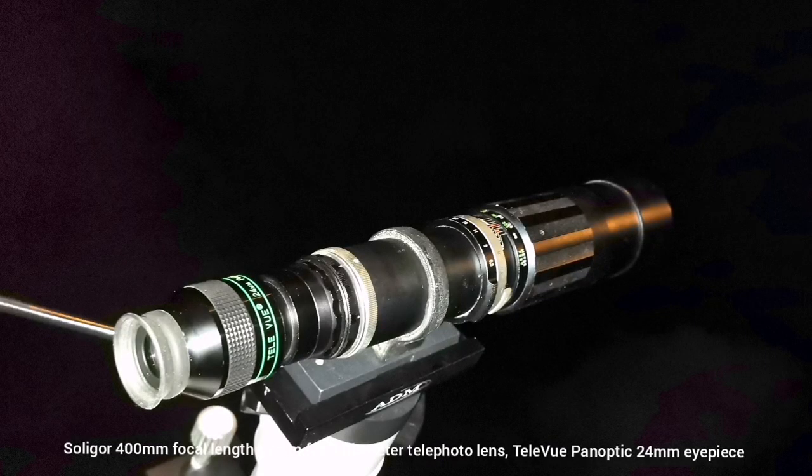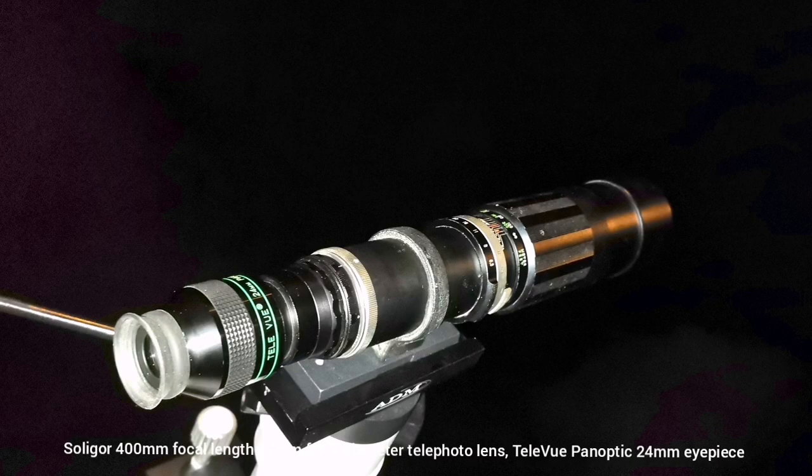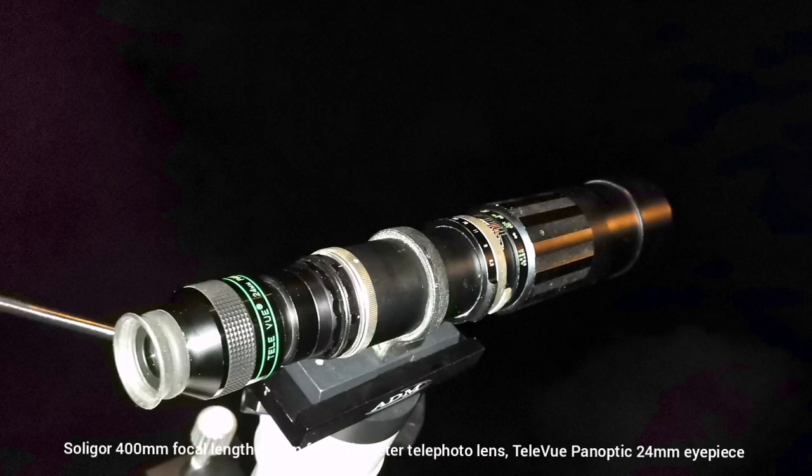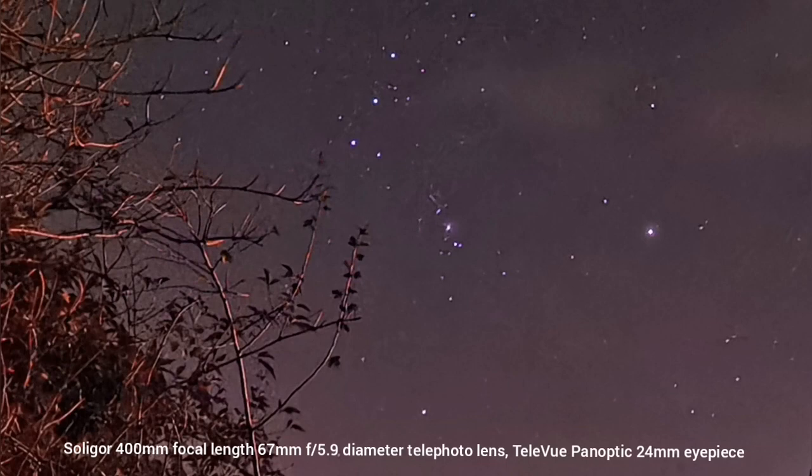The first telescope I'm using is the Seliger old lens, it's a solid old lens, 400mm focal length and 67mm aperture. I'm using a TeleVue Panoptic 24mm eyepiece. So this is the result,